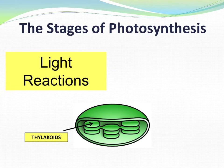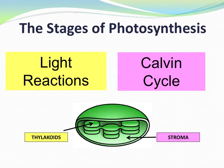The first stage of photosynthesis is called the light-dependent reactions, or the light reactions. These reactions take place in the thylakoid membranes. The second stage is called the Calvin Cycle. It's also been called the light-independent reactions, because light is not necessary for these reactions to occur. They occur throughout the stroma surrounding the thylakoid membrane.